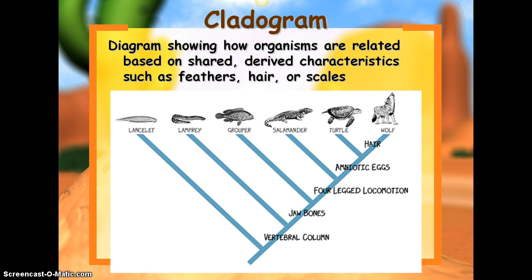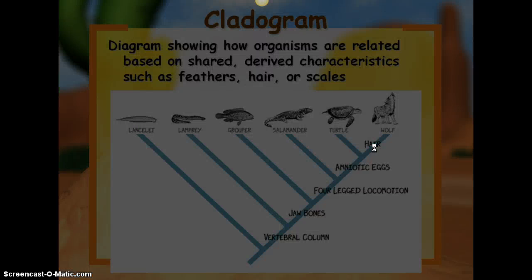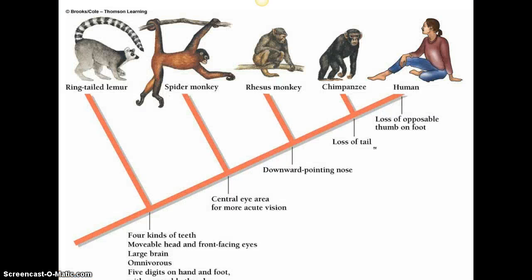Amniotic eggs pulls out salamander, so now we have only turtle and wolf. Then hair classifies only the wolf, so the turtle gets pulled out. We're going to do a build-your-own here in a second in your notes packet — there's a spot to do that. Here's another example just to show you, which you can use as well if you'd like.